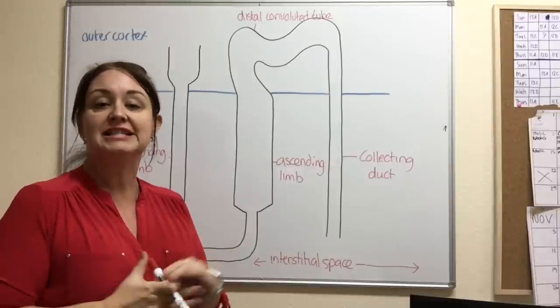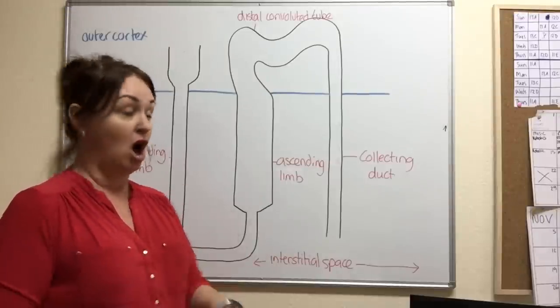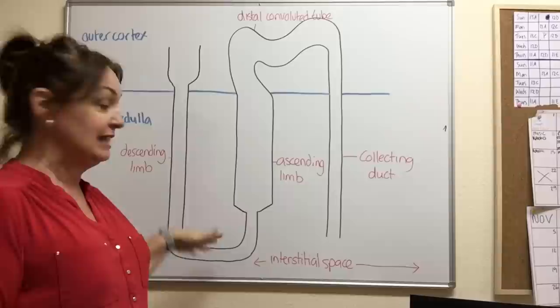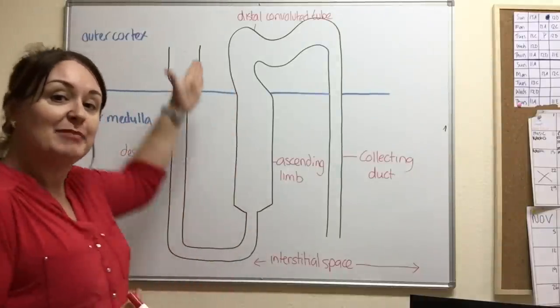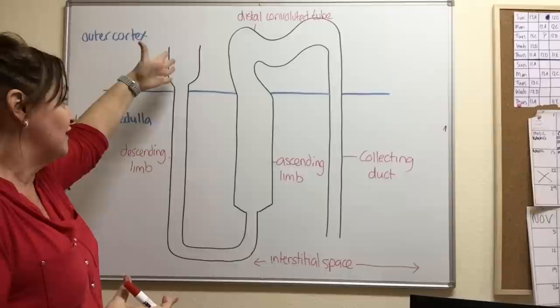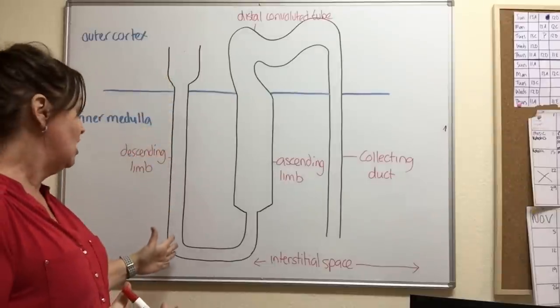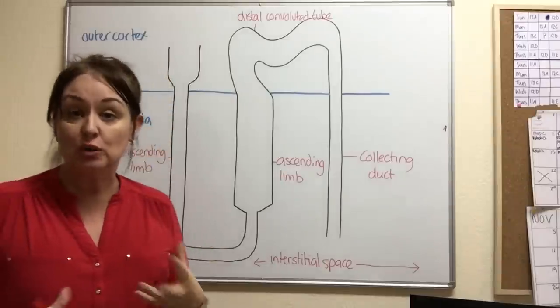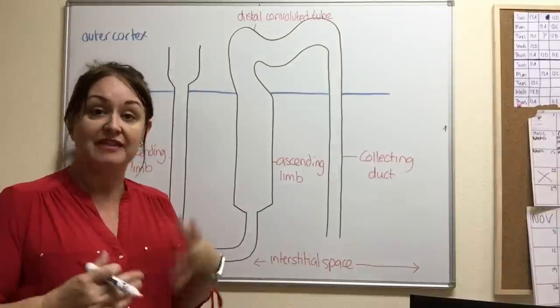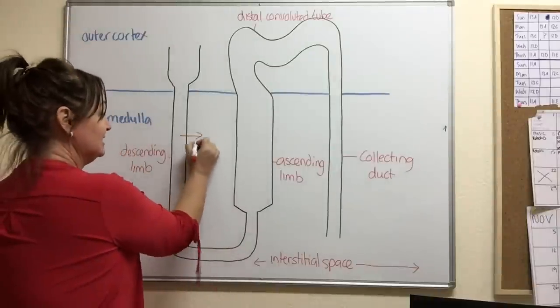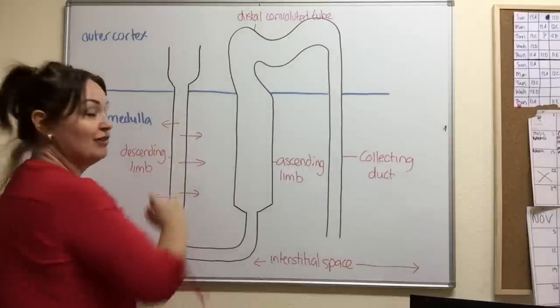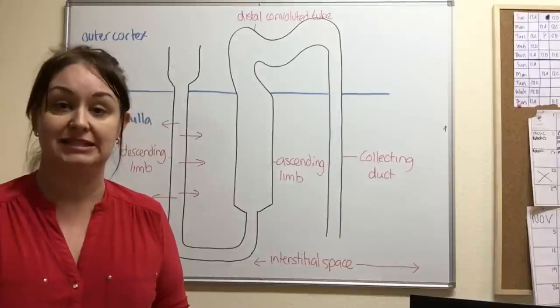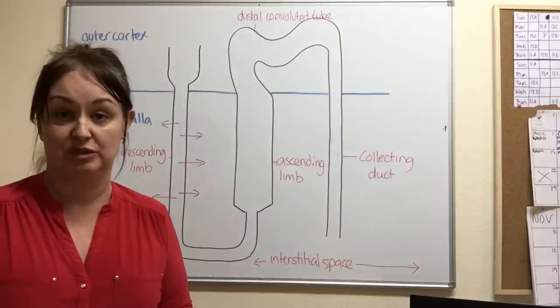We're going to consider the Loop of Henle as three parts: the descending, the base and the ascending. And the thing about these three parts is the first half here of the descending limb is totally permeable to water. That means water can easily pass out of this tube into the surrounding tissue, which is called the interstitial tissue or the interstitial space.